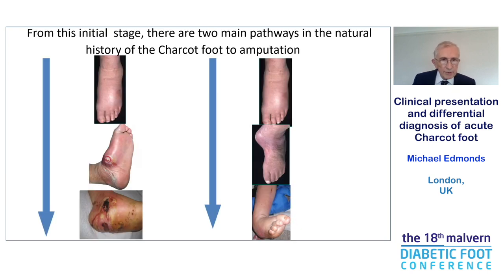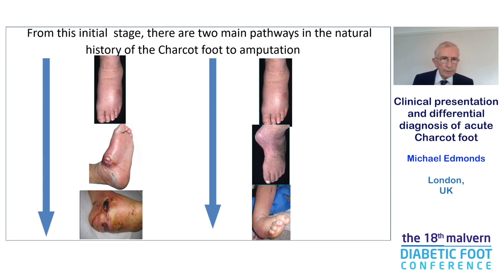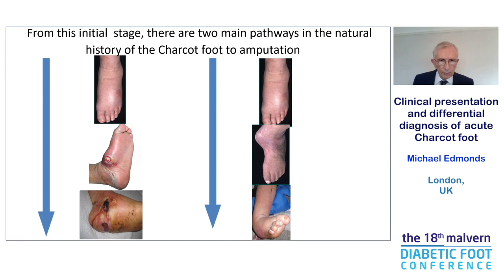From this initial stage, there are two main pathways in the natural history to amputation. On the left, the development of deformity, then ulceration, then infection, and then infective necrosis and gangrene. On the right, the development of deformity which can be very severe and then prohibits walking, leading to the need for amputation.